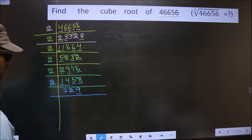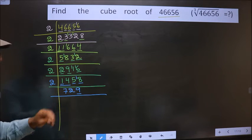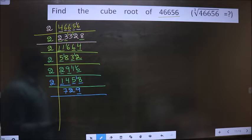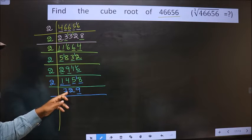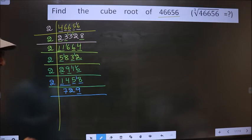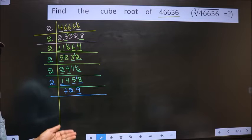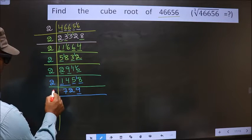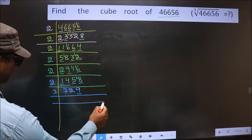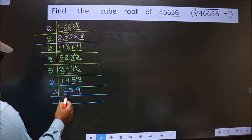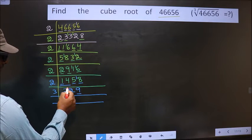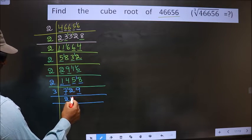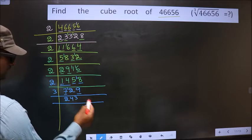The next number ends in 9, which is not even, so it is not divisible by 2. The next prime number is 3. To check divisibility by 3, add the digits: 7 plus 2 plus 9 is 18. 18 is divisible by 3, so this number is also divisible by 3. First digit is 7: closest in the 3 table is 3×2=6; 7 minus 6 is 1, carried forward making it 12. 3×4 is 12. Next digit is 9 — 3×3 is 9.